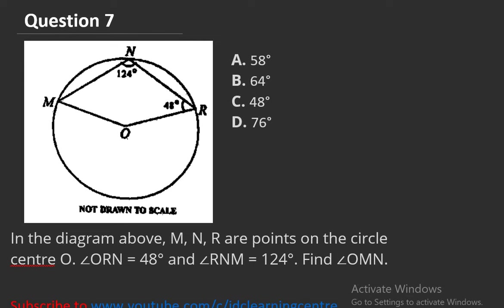To solve this, remember that the angle at the centre is twice the angle at the circumference. The angle at the circumference is 124 degrees, so the angle at the centre will be 124 times 2 equals 248 degrees.